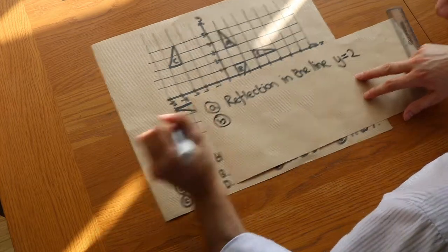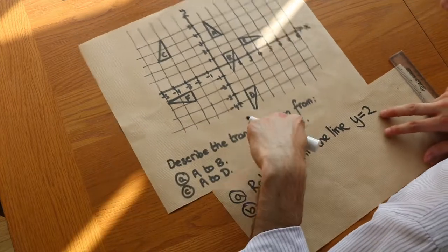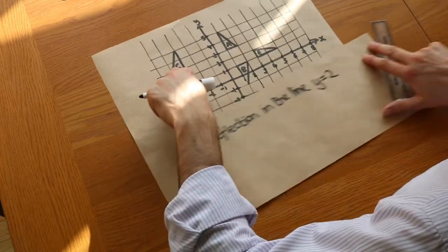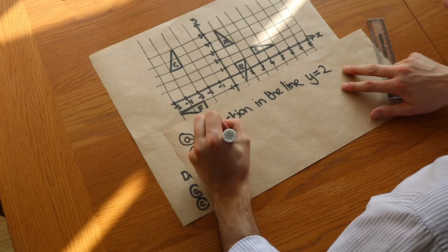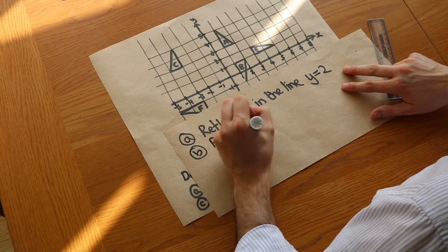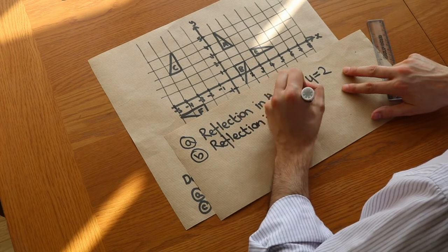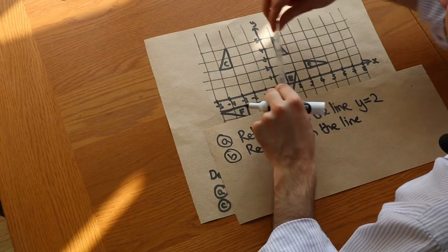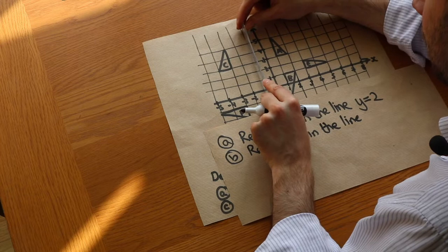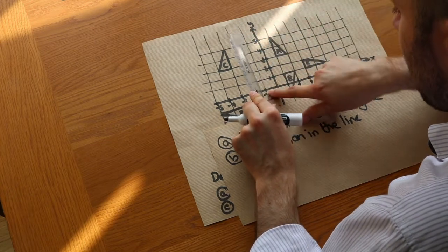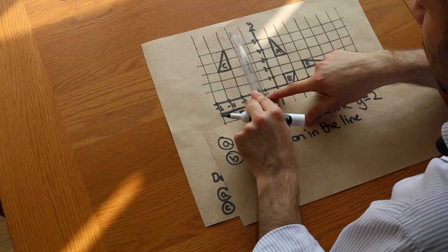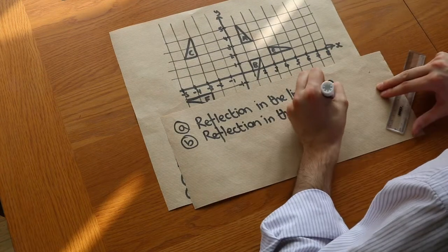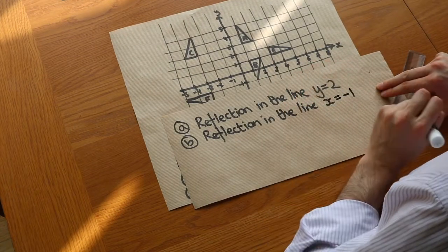What about B? So we want to know the transformation from A to C, so A to C here. So again, we get a mark for saying it's a reflection in the line and then you get a mark for giving the equation of that line. So the line this time, to get from A to C, the reflection line is here. And can we see that it cuts the X axis at minus 1 and therefore the equation is X equals minus 1.